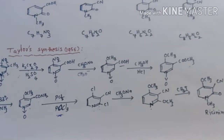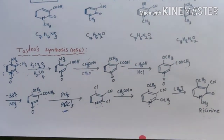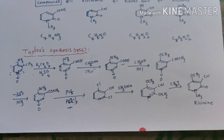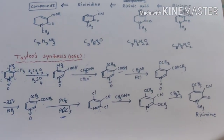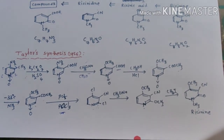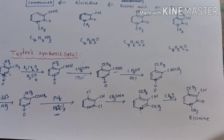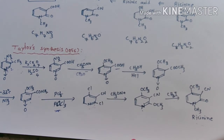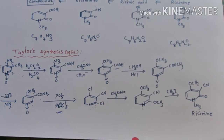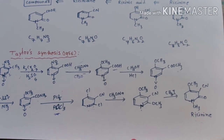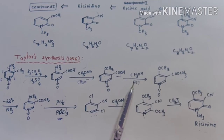Taylor's synthesis was used to confirm the structure of resinidine. Taylor took 3-methyl-4-nitropyridine oxide as the starting substance. When this is subjected to oxidation, the methyl group changes into a carboxylic acid group. The carboxylic acid compound is then subjected to aromatic nucleophilic substitution with sodium methoxide, replacing the nitro group with a methoxy group on the pyridine ring.